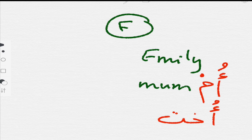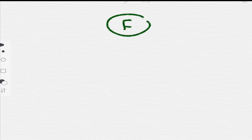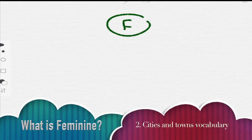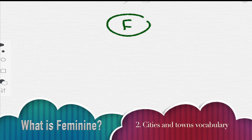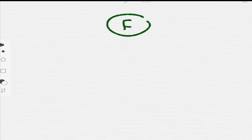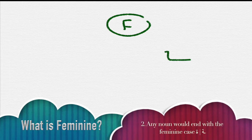So first, in Arabic we have vocabulary that is feminine by gender. Second, what is feminine in Arabic is that country names, cities, and towns are feminine — such as London. Any country, any city, or town is feminine in Arabic.